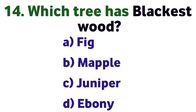Question number fourteen: Which tree has the blackest wood? Option A: Fig, B: Maple, C: Juniper, D: Ebony. Correct answer is D: Ebony.